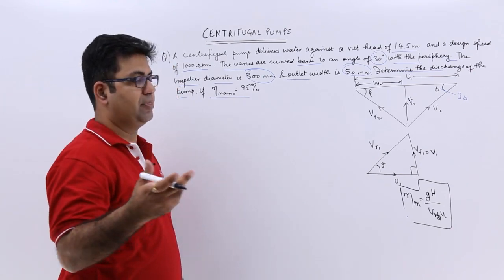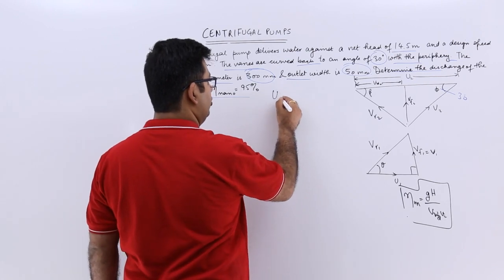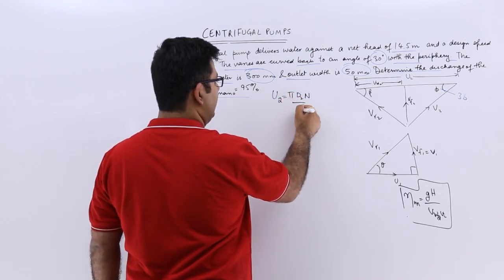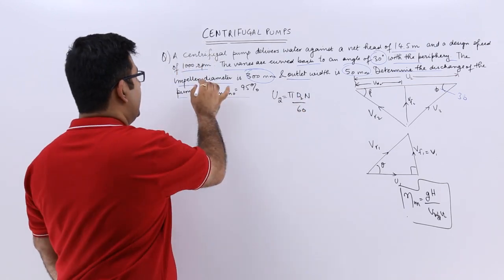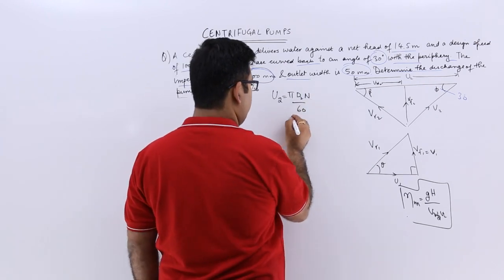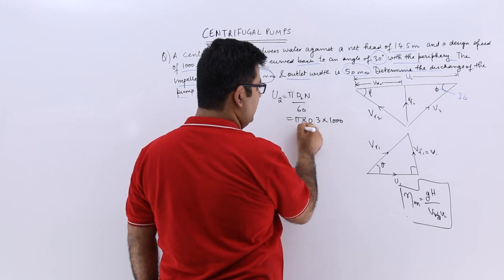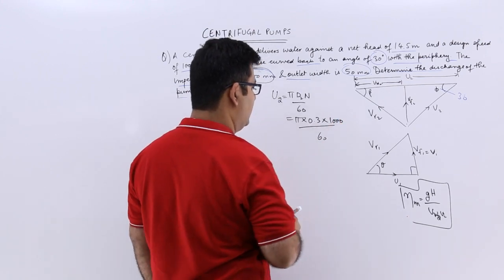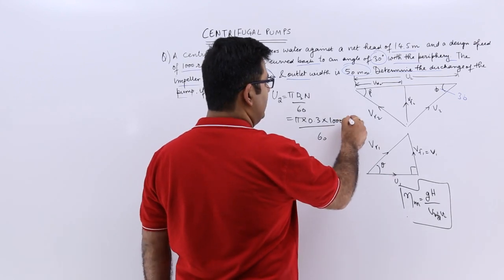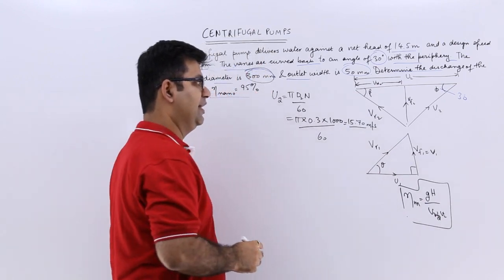Now we can easily find out the value of U2. So U2 would be pi into D2 into N by 60, because the impeller diameter at outlet is 300 millimeters. So this would be pi into 0.3 into 1000 by 60. So from here I will get a value for U2 as 15.70 meters per second.